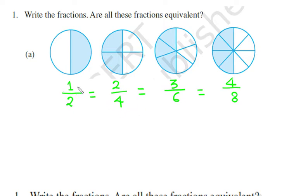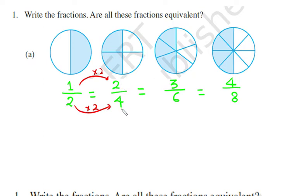Alternatively, we can verify this algebraically. If we take the fraction one half and multiply both the numerator and denominator by two, we get two fourths. We know that if we multiply the numerator and denominator of a fraction by the same non-zero number, the new fraction is equivalent to the first fraction.